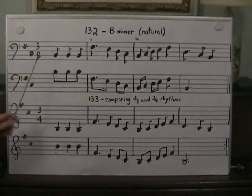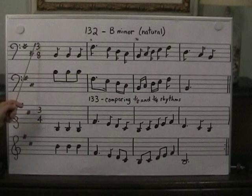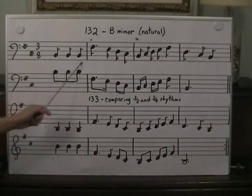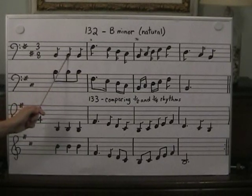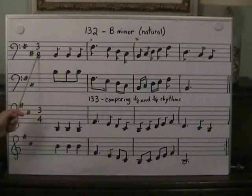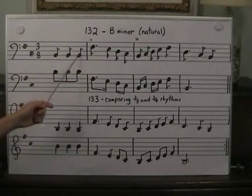Yesterday we did 'Out of Eternity,' and the 8th note is the beat — we have 3 eighth notes in every measure, or the equivalent, in 3/8 time. So let's say the rhythm in 3/8 time. The beat is: ta, ta, ta.